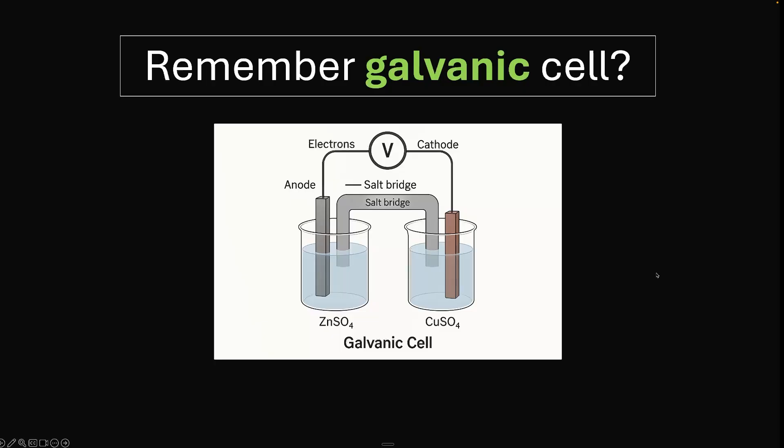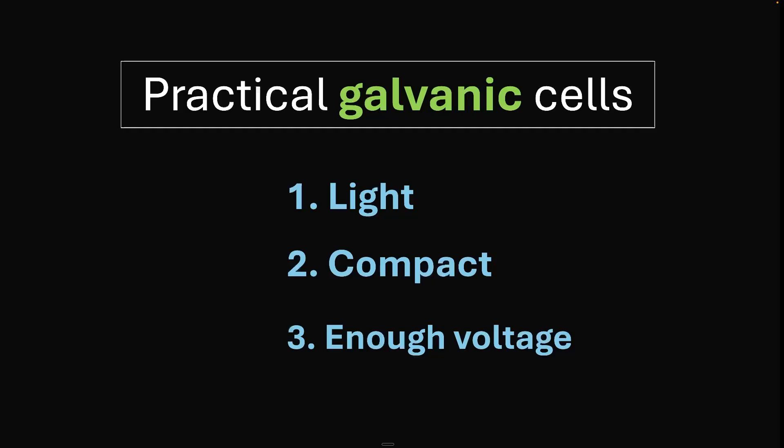Do you remember the galvanic cell? If not, I recommend you quickly recollect it. We have a salt bridge, an anode and cathode, and two solutions with zinc sulfate and copper sulfate. But this cell is not practical. You can't keep carrying around beakers and solutions. We need a practical galvanic cell which is light, compact, and has enough voltage.